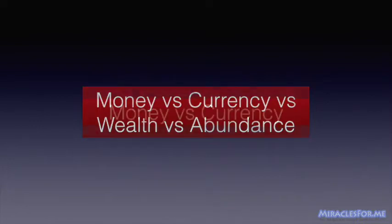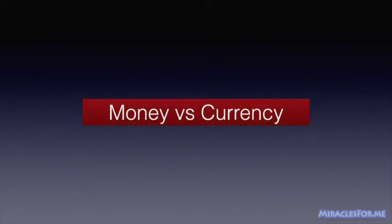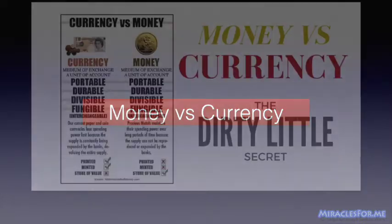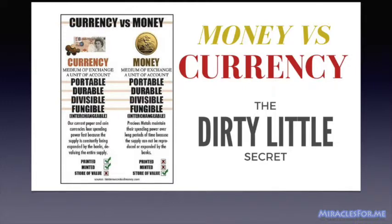We shall first distinguish between money and currency. Money and currency are almost exactly the same thing, but they have one important difference. Both are a medium of exchange, meaning we use them to exchange value. Both are a unit of account, meaning we use them to keep records of transactions and amounts. Both are portable, durable, divisible, and fungible — meaning a dollar in my pocket is the same as a dollar in your pocket.